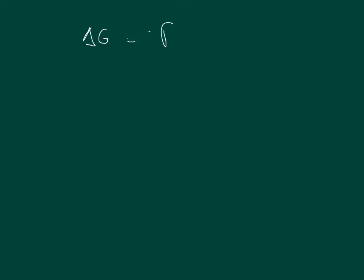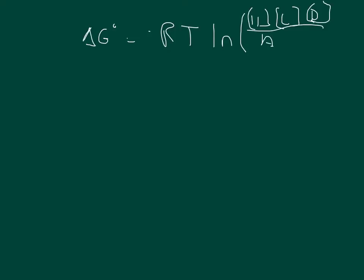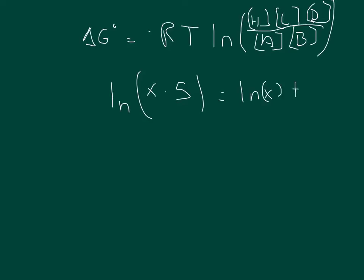Let's look at this mathematically. Delta G standard state equals negative RT times the natural log of Keq, where Keq includes hydrogen times C times D over A times B. Using log rules: the natural log of X times 5 equals the natural log of X plus the natural log of 5; and the natural log of X over 5 equals the natural log of X minus the natural log of 5.